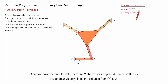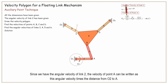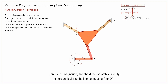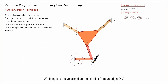Since we have the angular velocity of link 2, the velocity of point A can be written as this angular velocity times the distance from 0.2 to A. Here is the magnitude, and the direction of this velocity is perpendicular to the line connecting A to 0.2. We bring it to the velocity diagram, starting from an origin OV.